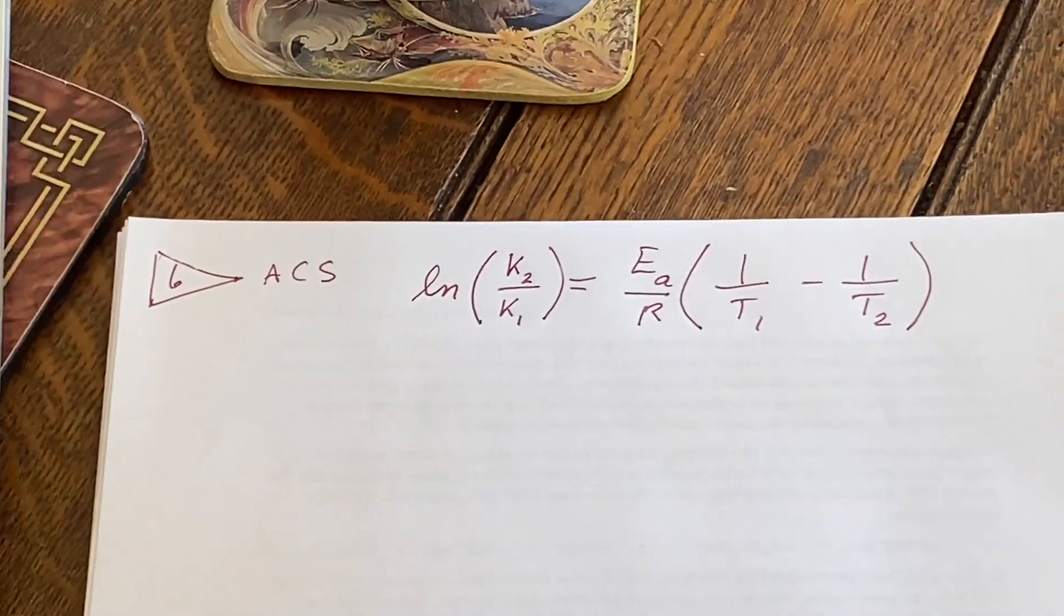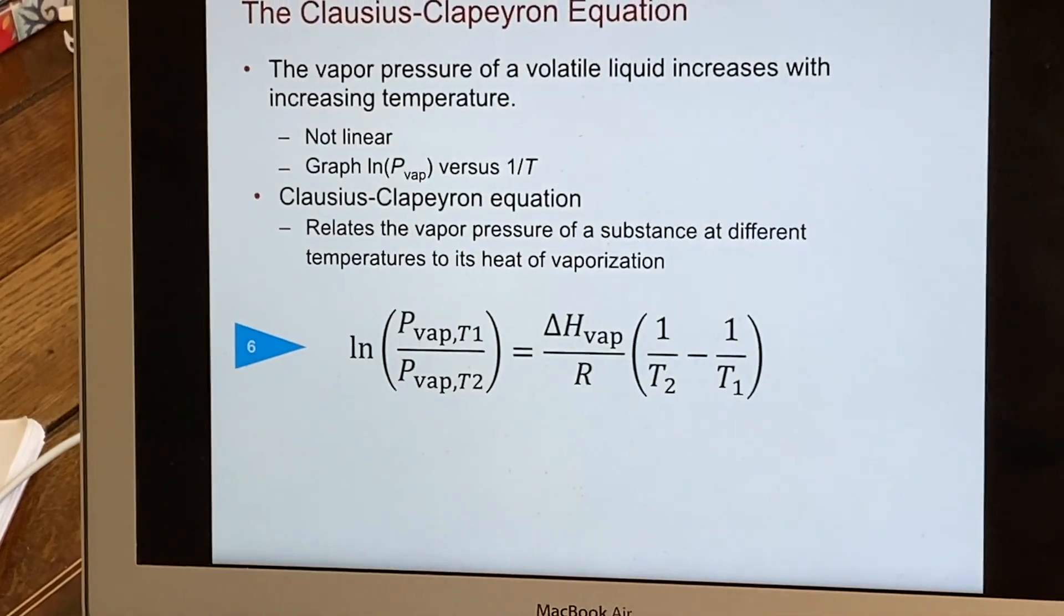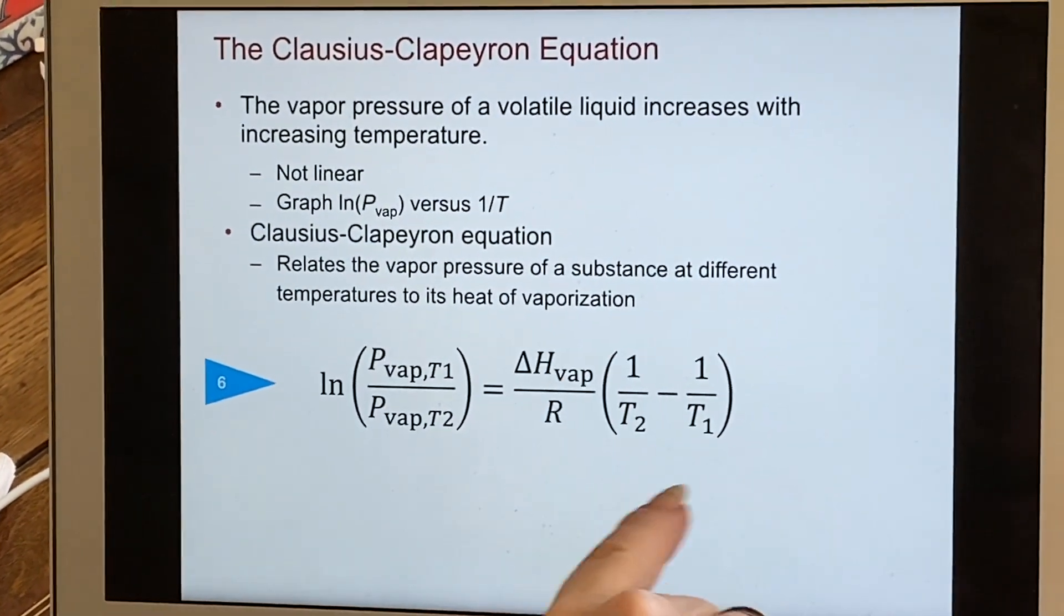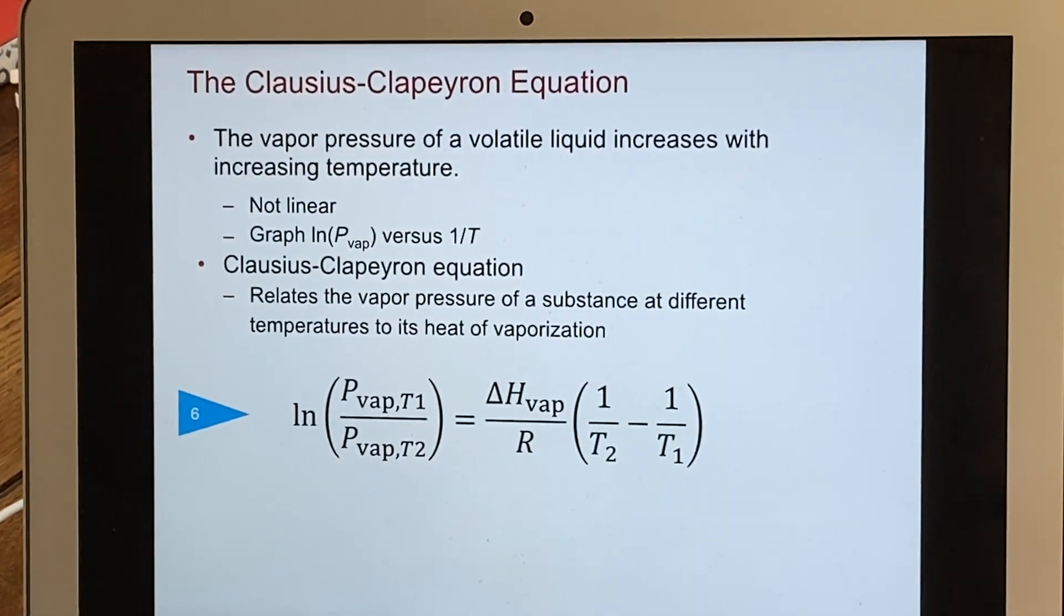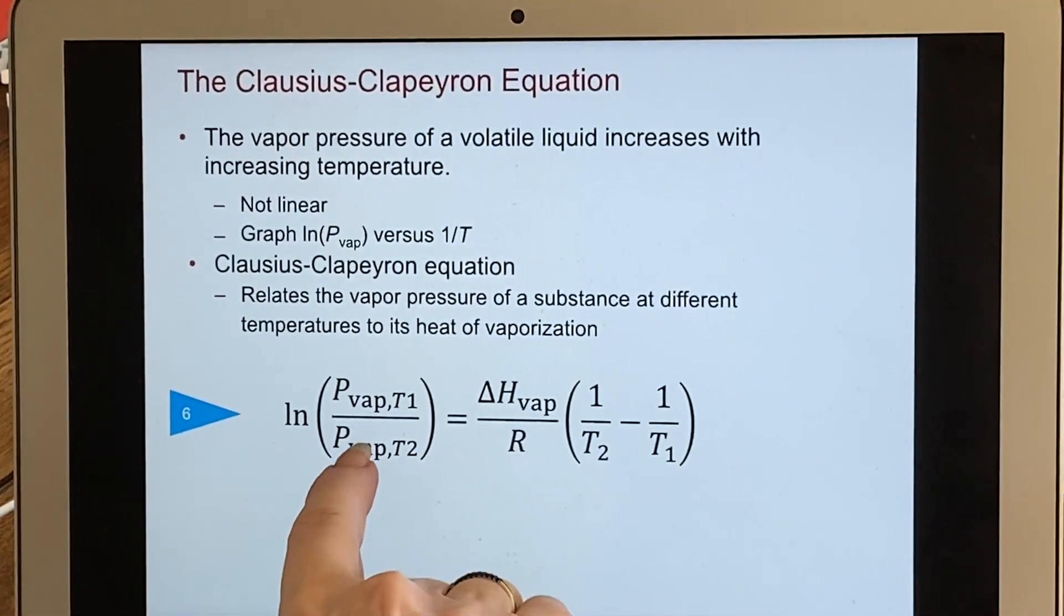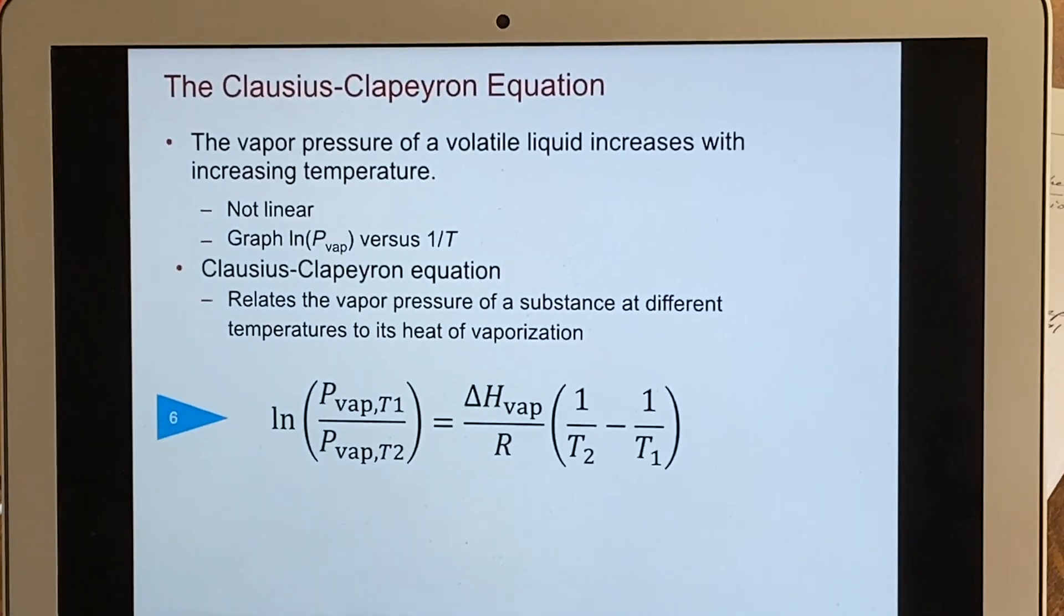The other thing that I want to point out about this equation is that written this way, you've got five different possible variables. And this is set up so that you'd have to have four of the variables, and then you can find the fifth one.